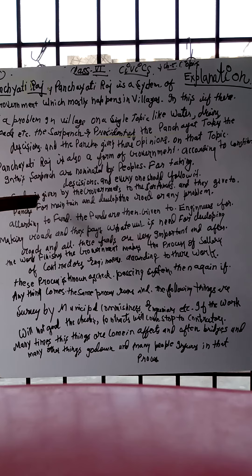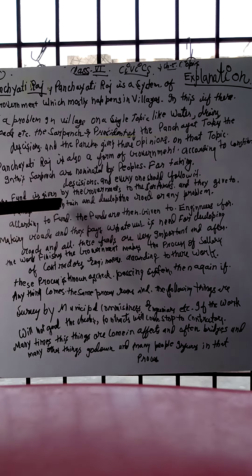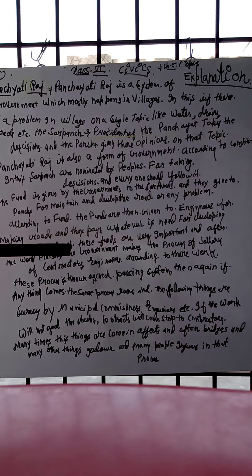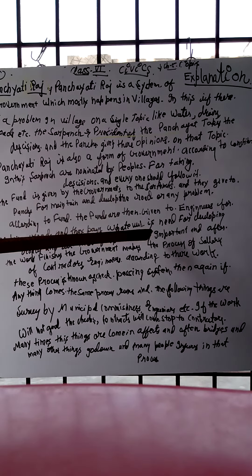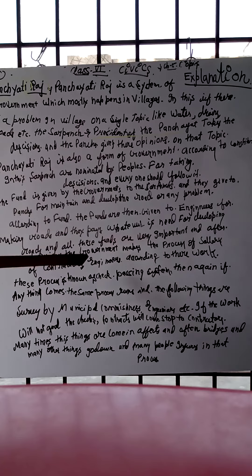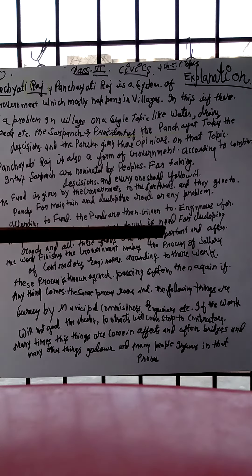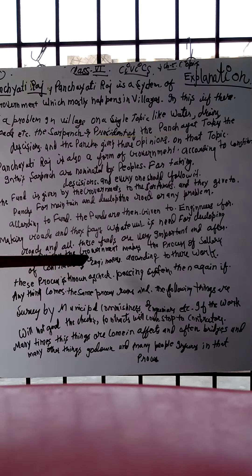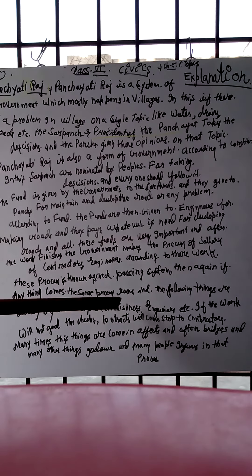The fund is given by the government to the Sarpanch, and they give it to the Panch for maintenance and development. Roads and other problems are addressed according to the available fund. The Panch then give the funds to the engineer for making roads and paying whatever is needed for development. After the work finishes, the government processes the salary of contractors and engineers according to their work — this process is known as the check passing system.